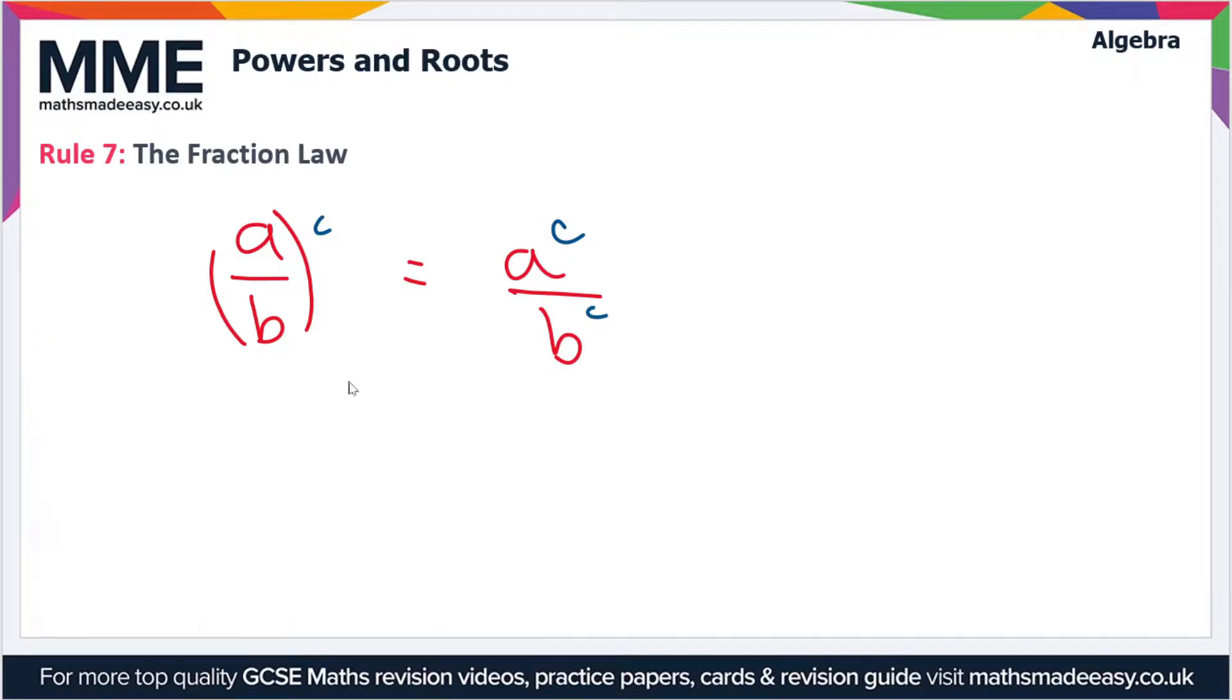This applies to any fraction, so it could be a mixed fraction. For instance, we could have two and three quarters to the power five. This is going to be equal to, well, let's actually first write this as an improper fraction or a top heavy fraction. So two and three quarters is 11 over four.